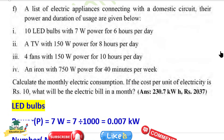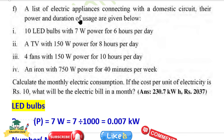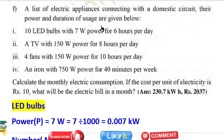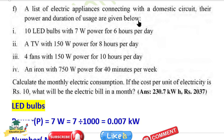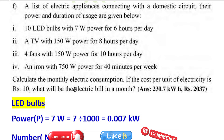Question F: A list of electric appliances connected in a domestic circuit with their power and duration of usage is given — calculate the electricity consumption.